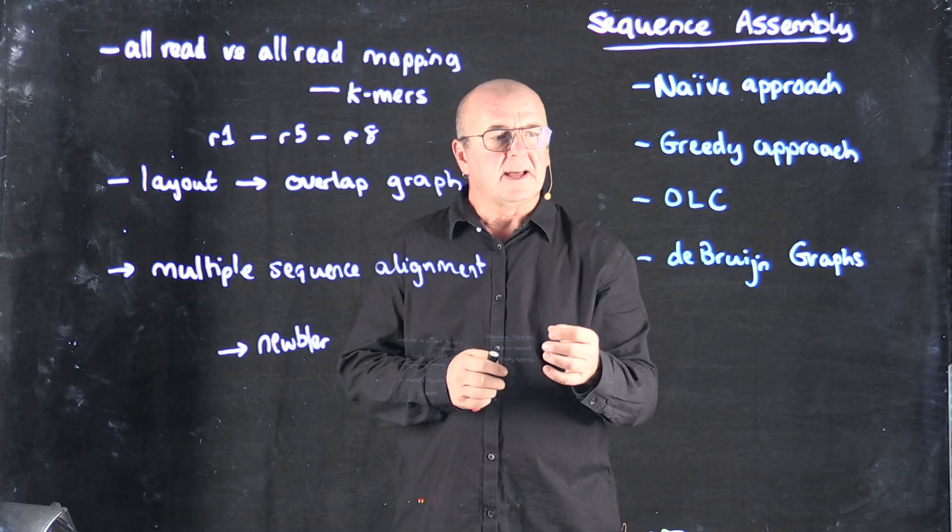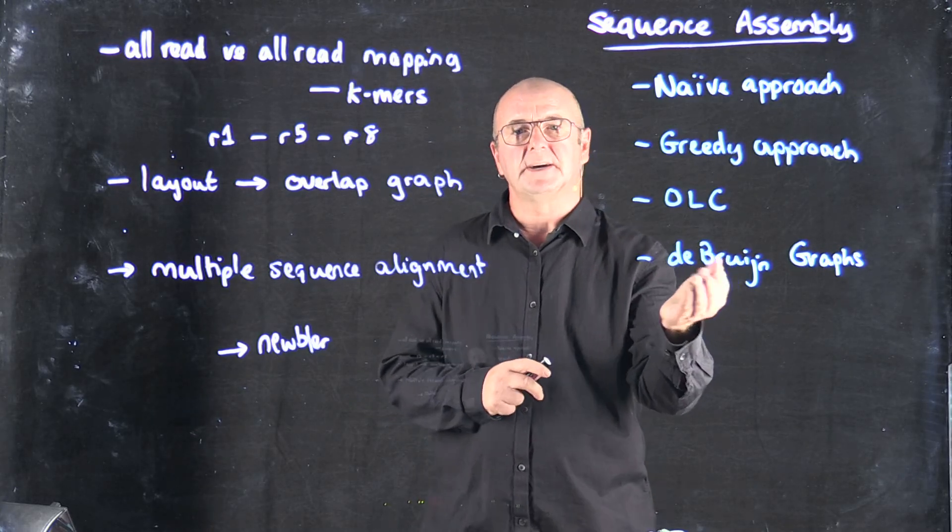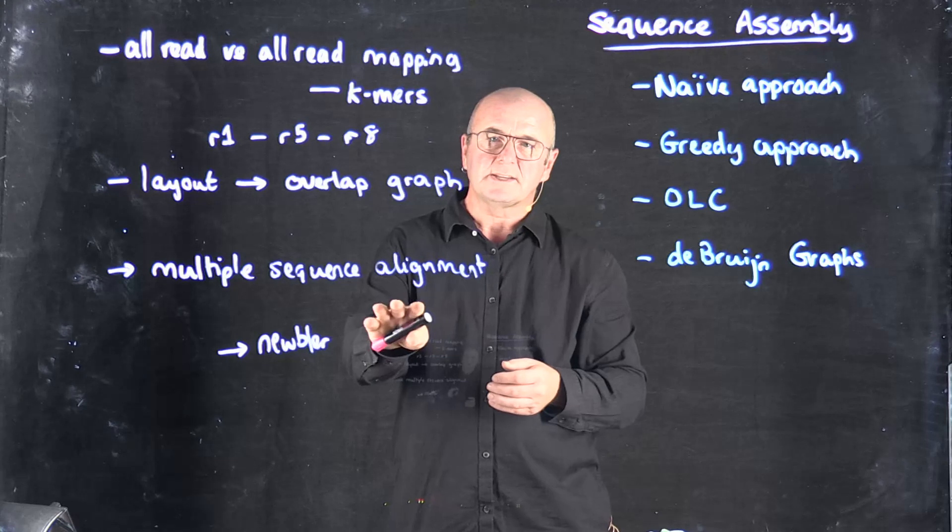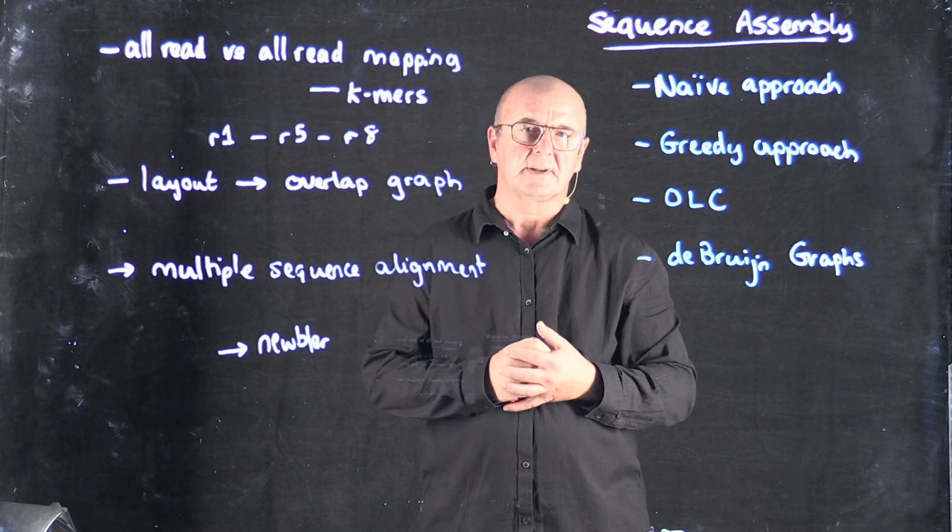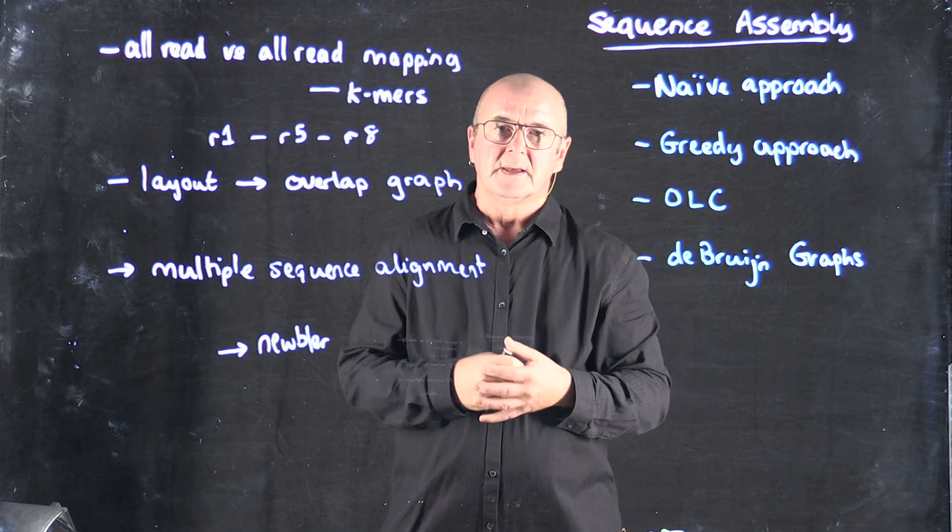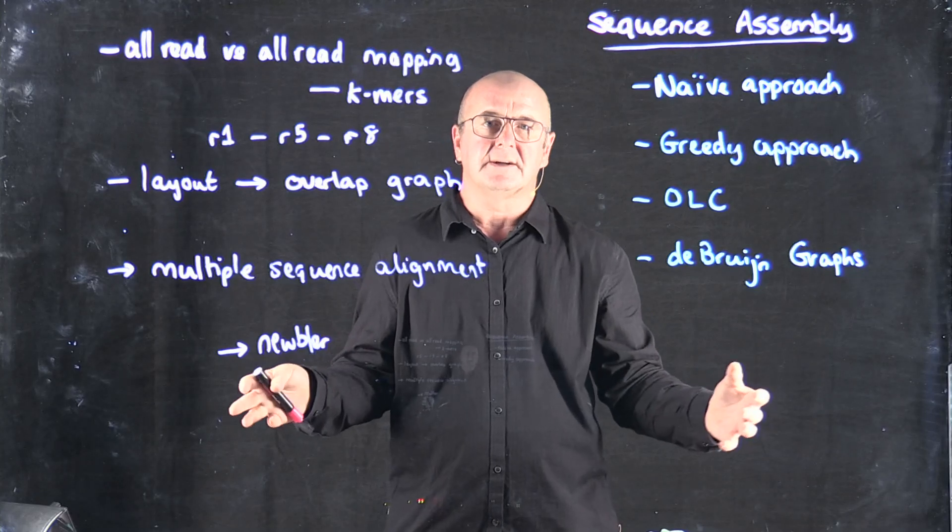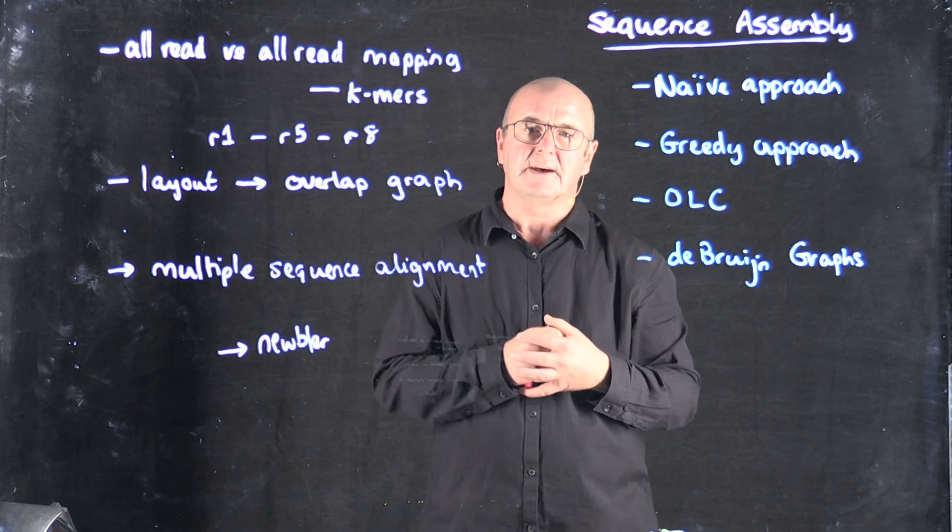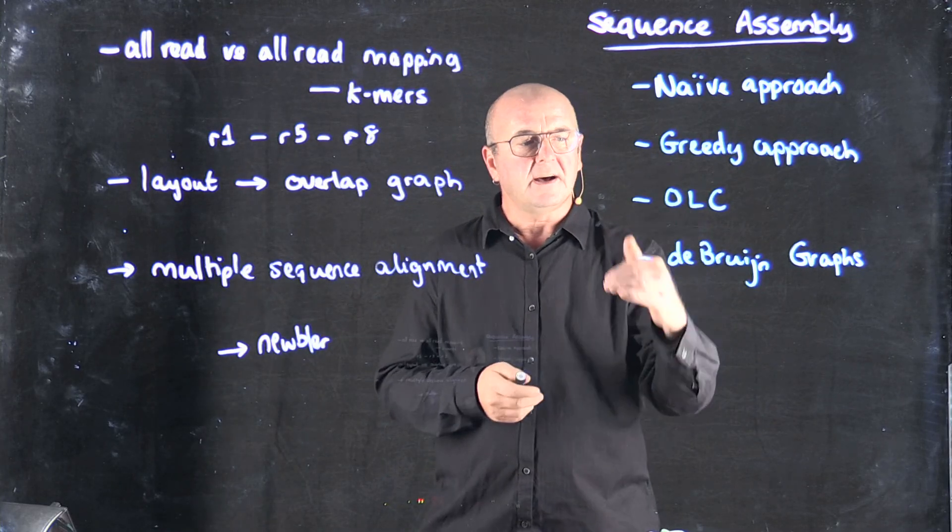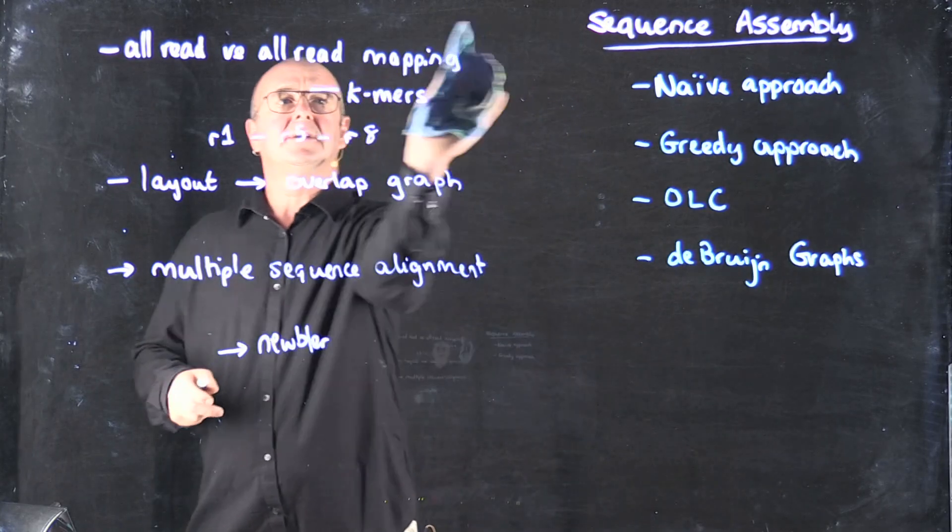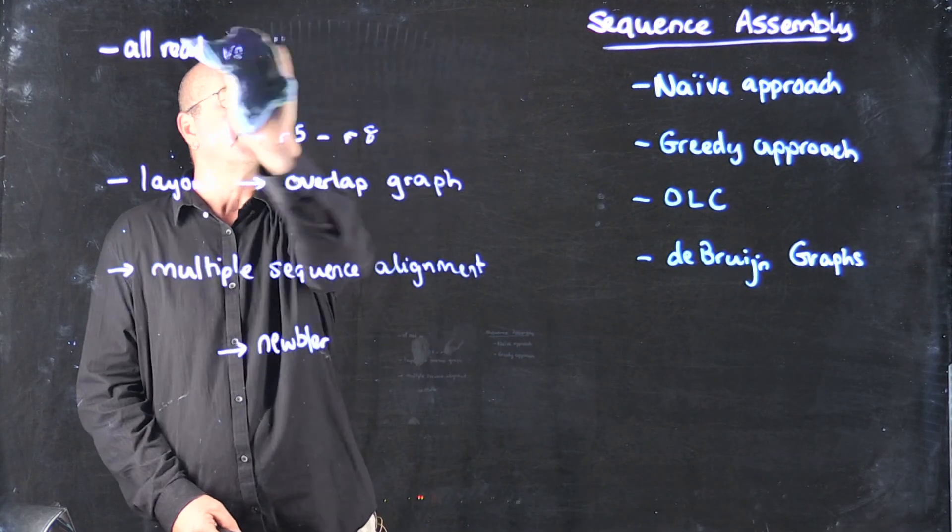The problem with overlap layout and the reason that it's been replaced by de Bruijn graphs is that it's quite slow because of this requirement for something like a multiple sequence alignment, and it doesn't really scale well to the size of data sets that we have nowadays.